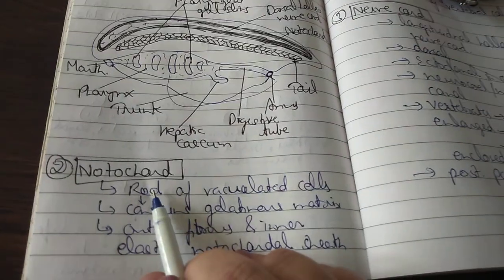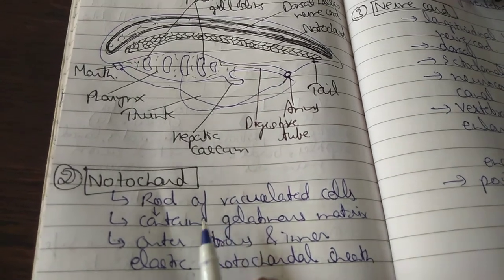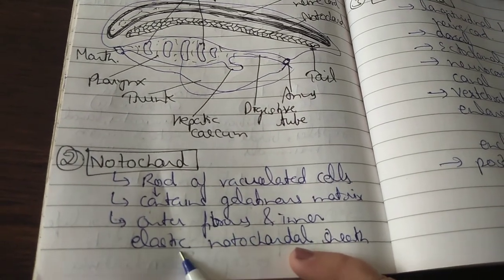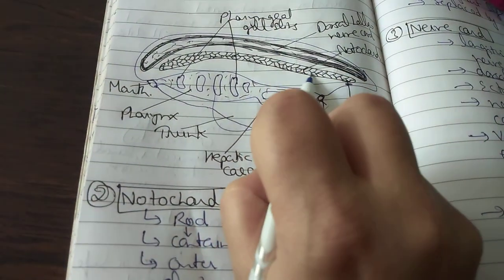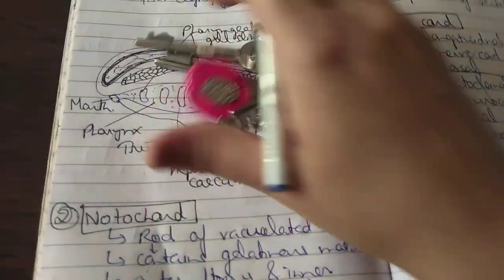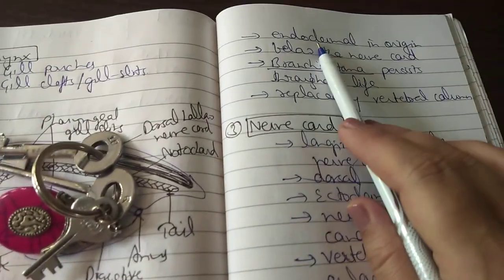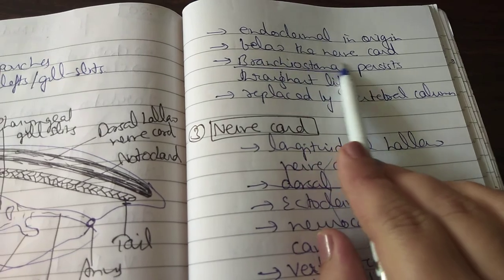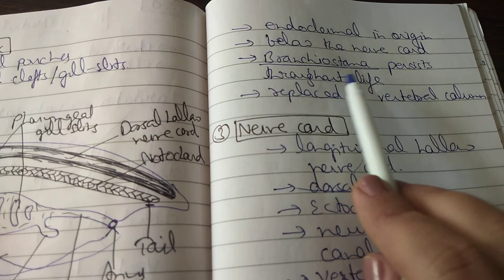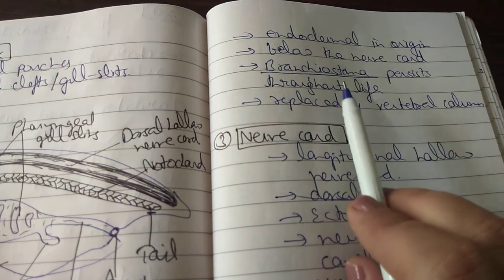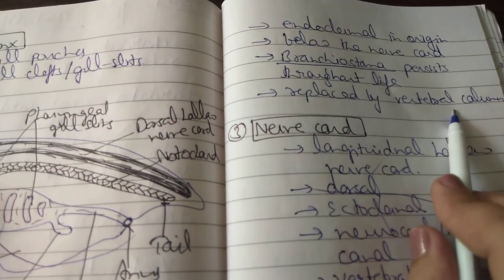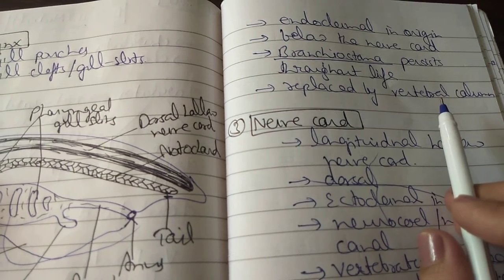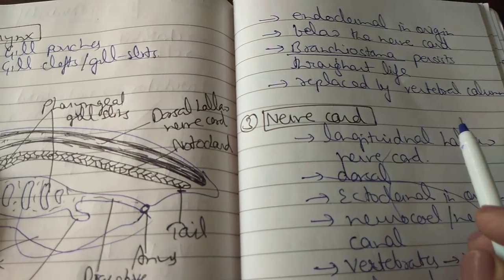The second fundamental character is the notochord. The notochord is basically a rod of vacuolated cells. It contains a gelatinous matrix surrounded on the outer side by a fibrous sheath and on the inner side by an elastic notochordal sheath. It is derived from the endoderm cells present in the roof of the archenteron of the embryo and is located below the nerve chord. In Branchiostoma it persists throughout life; in adult vertebrates it is partially or completely replaced by the vertebral column, remaining only as disconnected thickenings of the intervertebral disc.